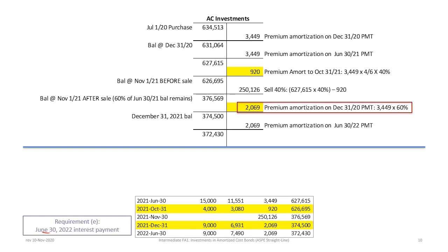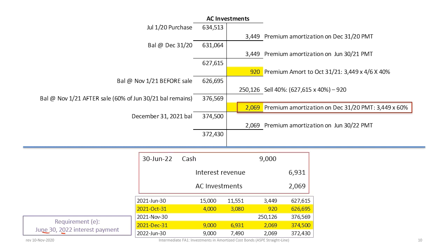For the last entry on June 30, 2022, we debit cash for $9,000, credit interest revenue for $6,931, and credit AC investments for $2,069. This is identical to the December 31, 2021 entry because straight line amortization is the same every payment. From here to maturity, unless more bonds are sold, it would be the exact same entry every six months, resulting in a balance at the end of June 2022 of $372,430.